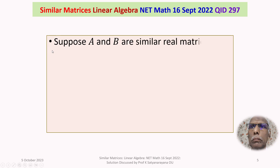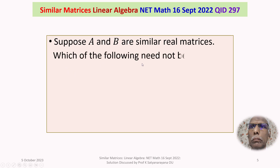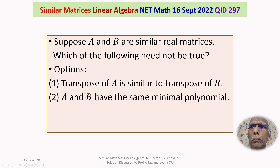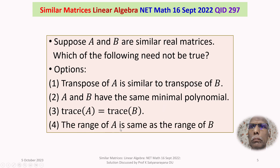The given question is: suppose A and B are similar real matrices — which of the following need not be true? Option 1: transpose of A is similar to transpose of B. Option 2: A and B have the same minimal polynomial. Option 3: trace of A is equal to trace of B. Option 4: the range of A is same as the range of B.